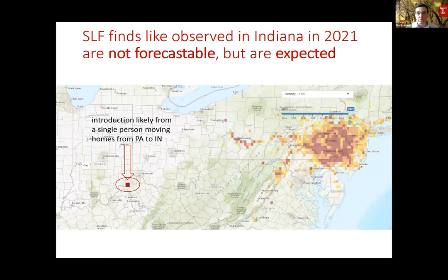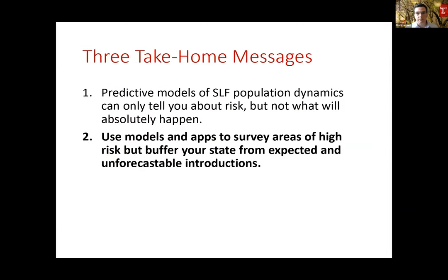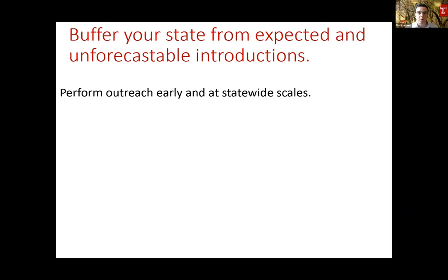Finds like what we currently observed in Indiana in 2021 are just not forecastable, but they're very expected. We expect people to move their belongings and families to different parts of the country and accidentally spread spotted lanternfly. These are expected long-distance dispersal events, but incredibly complex to forecast. Use these models and applications to survey areas of high risk, but also buffer your state from expected and unforecastable introductions like what happened in Indiana. Perform outreach early and at statewide scales — many people looking and knowing about spotted lanternfly are much more likely to identify these rare introductions.